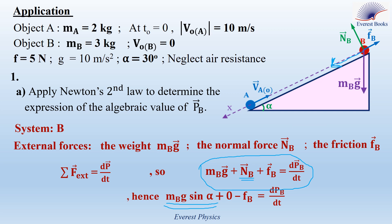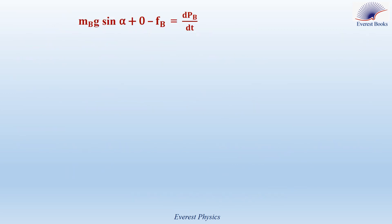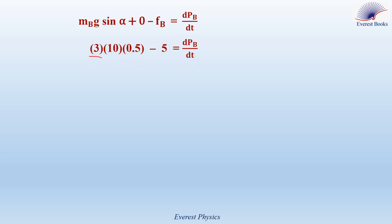The normal force is perpendicular to the x-axis, so it has no component along it. The friction force is opposite to the positive x direction, so we have minus Fb. This gives MbG sine alpha plus 0 minus Fb equals dPb/dt. The mass of object B is 3 kg, gravitational acceleration is 10 m/s², sine alpha is 0.5, and friction is 5 N. This gives 10 equals dPb/dt.